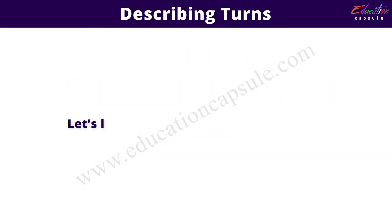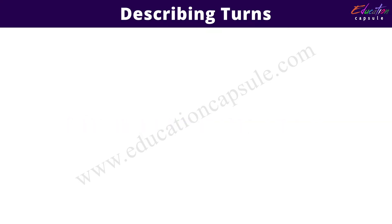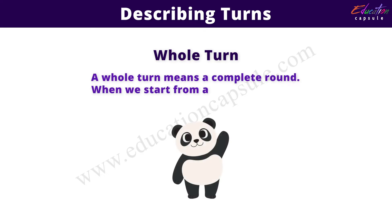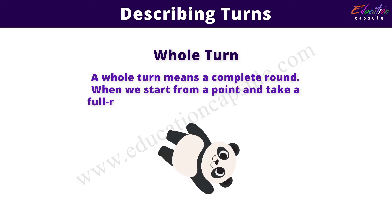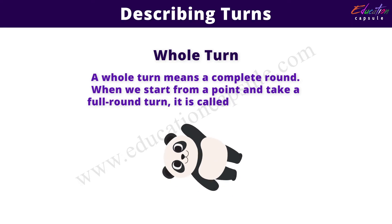Let's learn about different types of turns. The first one is whole turn. A whole turn means a complete round. When we start from a point and take a full round turn, it is called a whole turn.